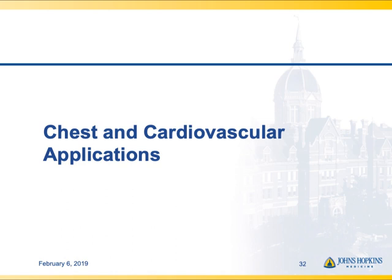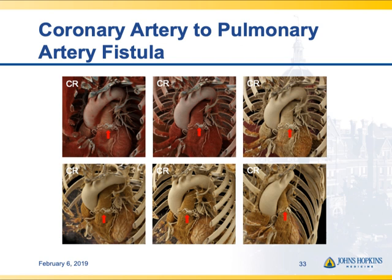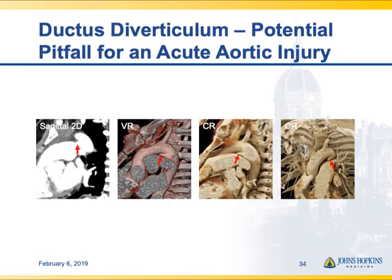Now I want to wrap up with chest and cardiovascular imaging applications. Here is a coronary artery to pulmonary artery fistula — apparently fairly commonly seen by cardiology colleagues at catheterization, but not often on imaging. With cinematic rendering you can see this fine mesh of vessels that wraps around the main pulmonary artery trunk.